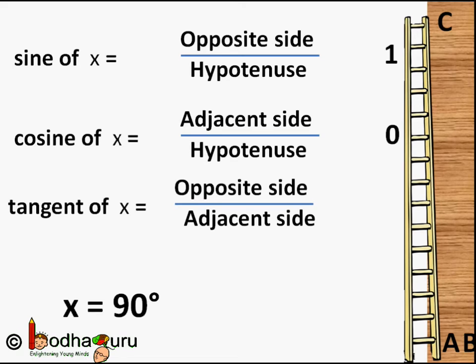Cos of 90 degrees will be adjacent side AB, which is 0, divided by a non-zero value — the hypotenuse, which is the ladder size. So 0 divided by a non-zero value is 0, so cos of 90 degrees will be 0. And tangent of 90 degrees will be opposite side BC divided by adjacent side AB, which is 0 — anything divided by 0 is undefined, so tan of 90 degrees is an undefined value.